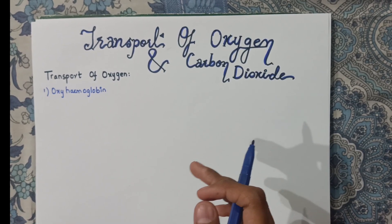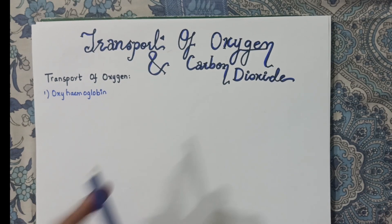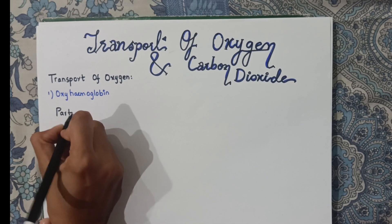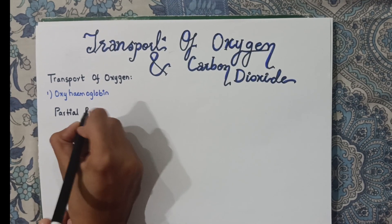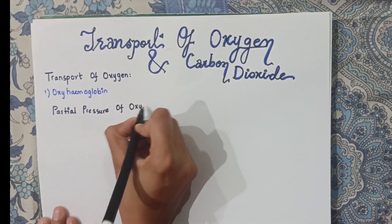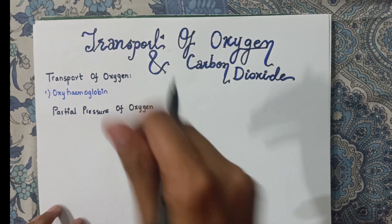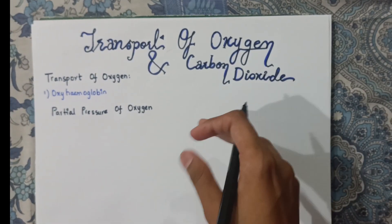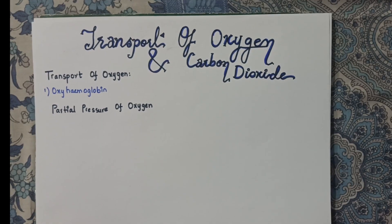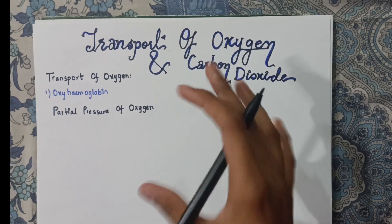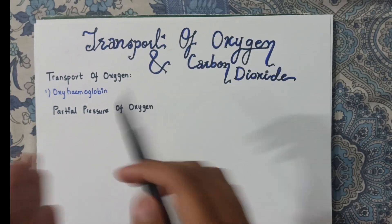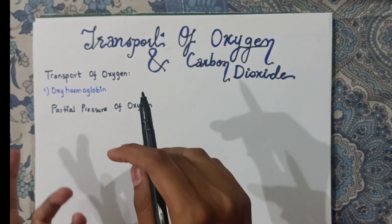We know that hemoglobin carries oxygen in our blood. For example, we take oxygen from the surroundings — in our lungs, the oxygen's partial pressure will be more as compared to our blood. So our lungs will move the oxygen into our blood, because the partial pressure in blood is less than in the lungs.